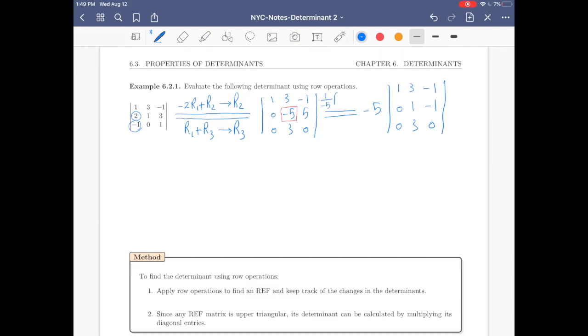You see, indeed, what we've done is 1 over negative 5 times R2 goes to R2. However, this is the way it affects the determinant. Now we have negative 5 here. What should we do? We have to basically make this 0. So negative 3 R2 plus R3, R3.